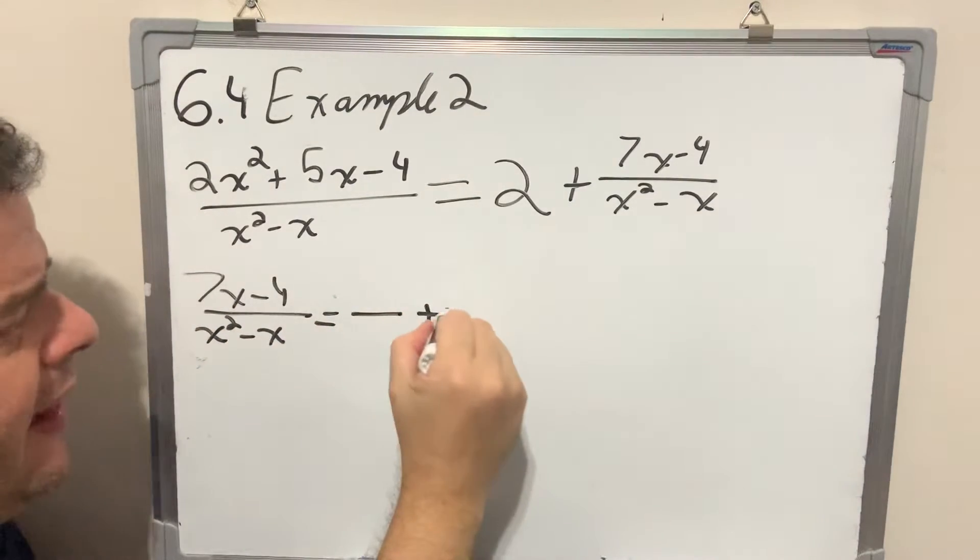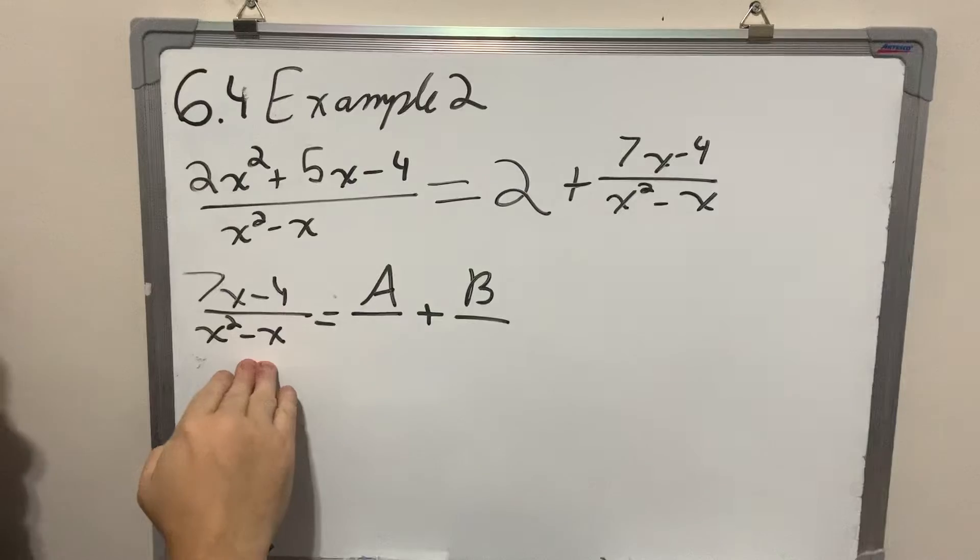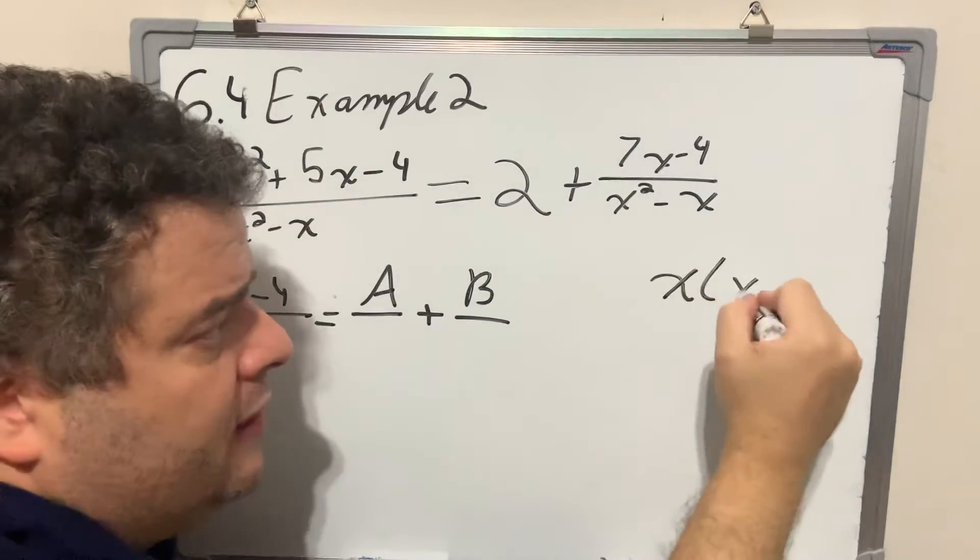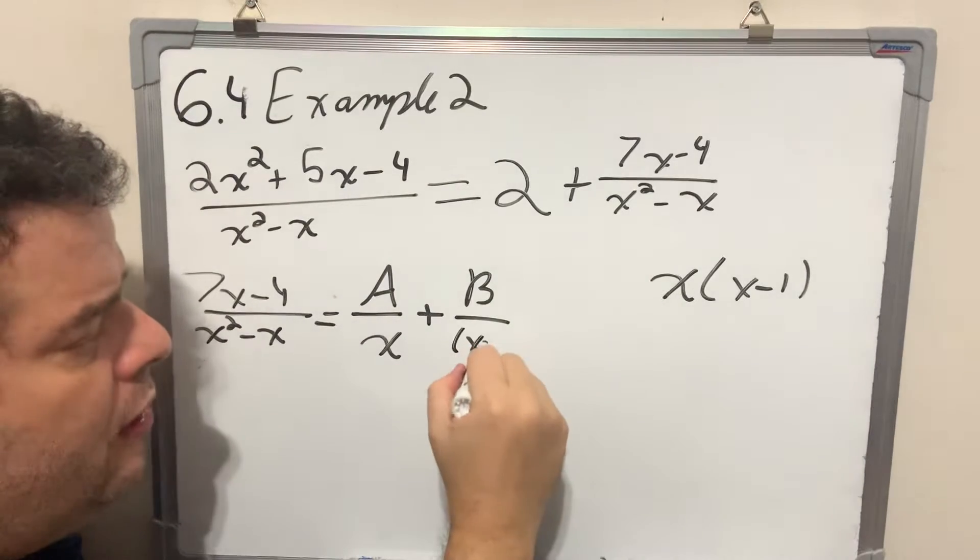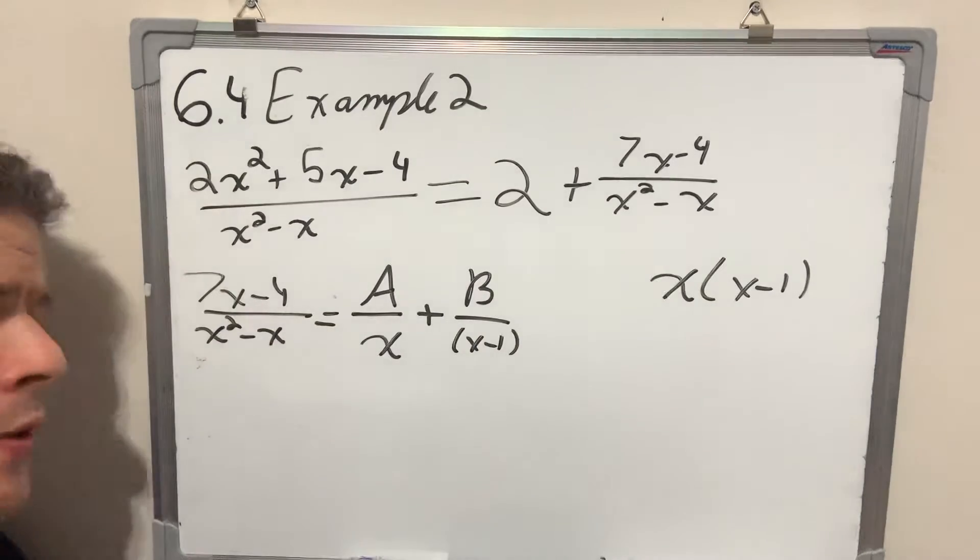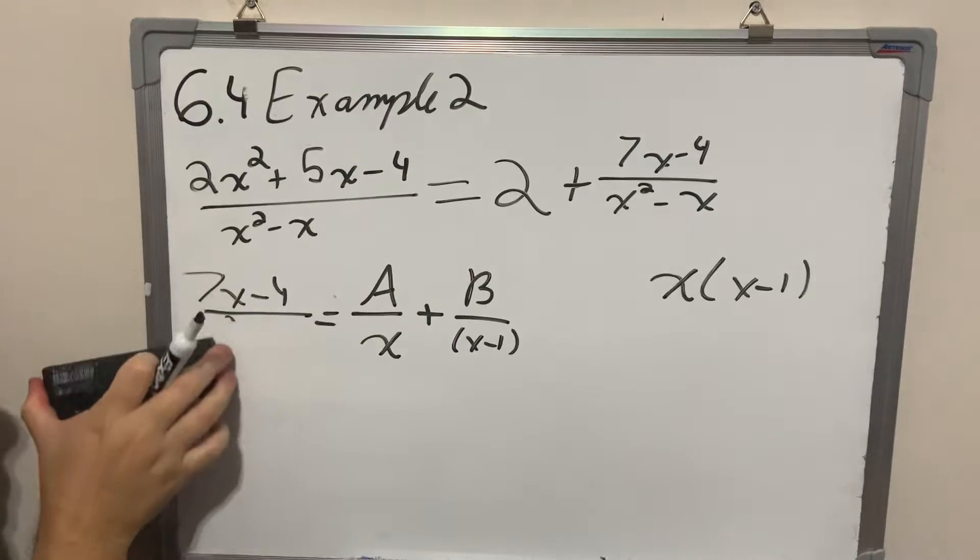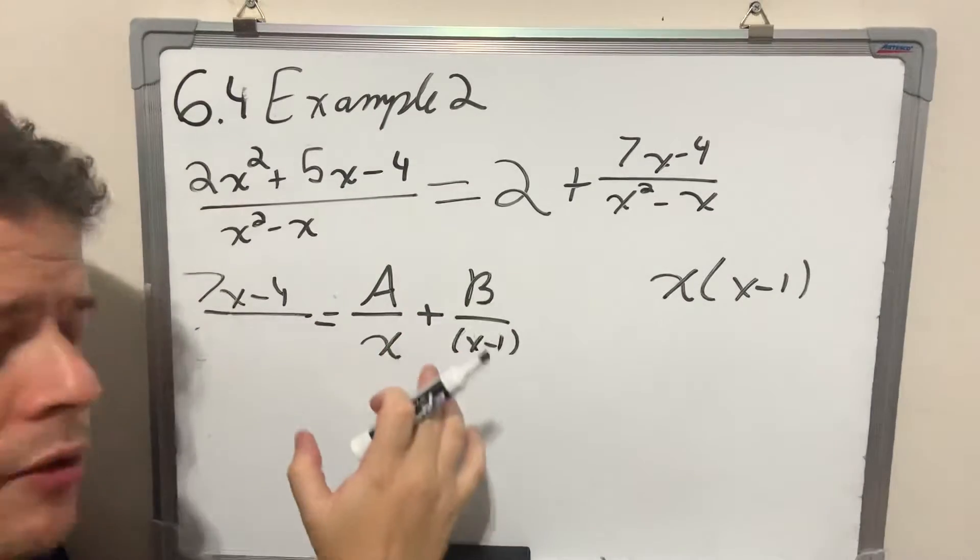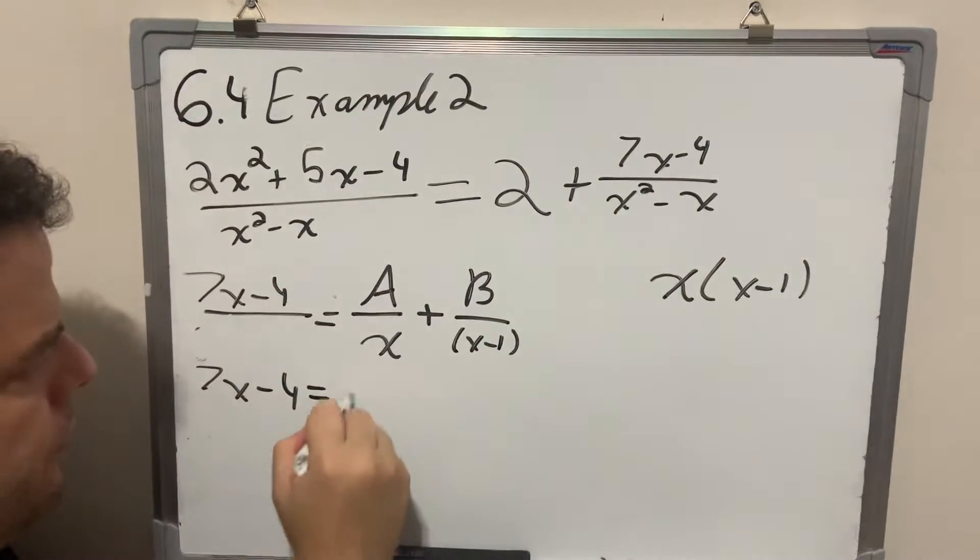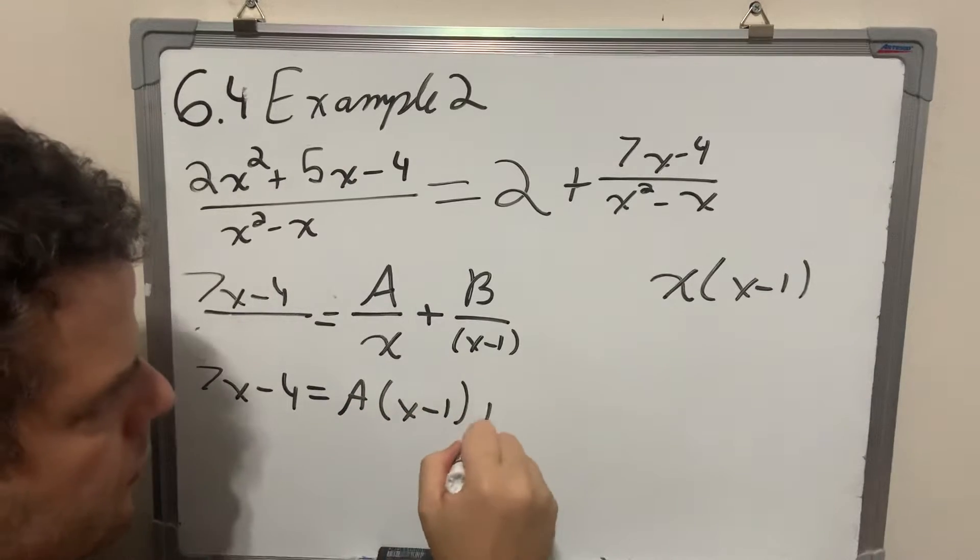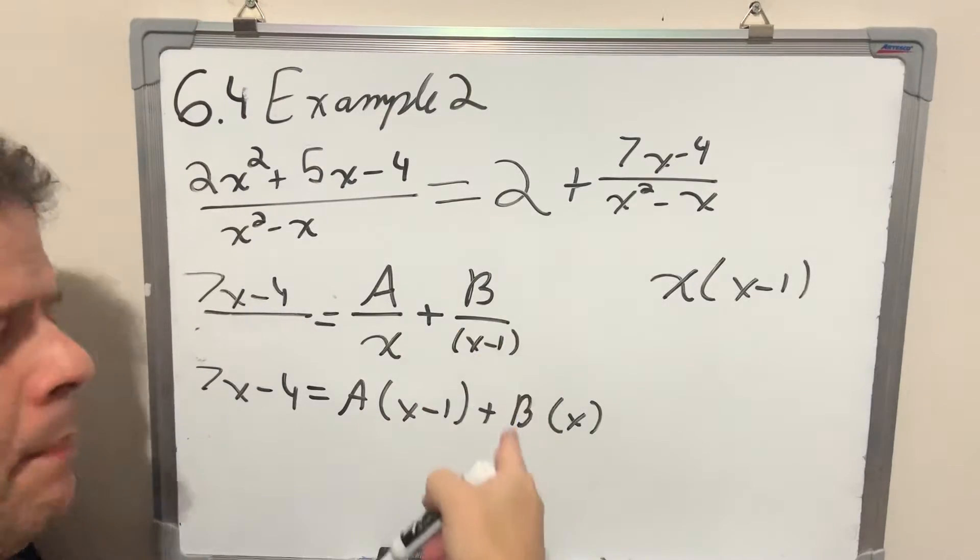I'm going to rewrite this as 7x minus 4 over x squared minus x. I'm going to rewrite that as the addition of two fractions. An a goes here, a b goes here. I'm going to factor my denominator, common factor, x, x minus 1. I'm going to put one of the factors here and the other factor here. Same thing we did yesterday. In order to isolate this portion, I'm going to get rid of my denominator here and cross multiply a times this and b times this. So I'm going to end up with this expression.